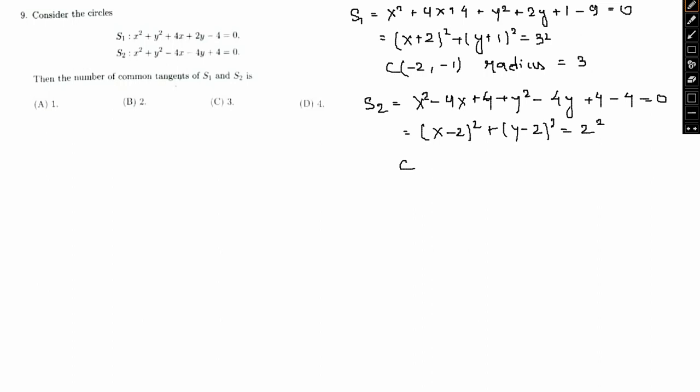Again, so for this say c1 and c2, here the center will be 2 comma 2 and radius would be 2 in this regards. So now if I have to find the distance between the centers, so distance between the centers would be 2 minus minus 2 whole square plus, we simply use the distance formula in this regards.